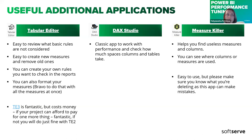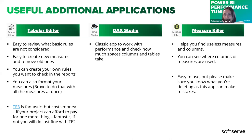MeasureKiller is a very simple application. I use it to find useless columns, or to see where columns or measures are used across visuals. You have to know what you're deleting, because it might say a measure is not used anywhere and suggest deleting it — you delete it, then open your report, and it crashes in some visuals. Always double-check what all three applications want to do.